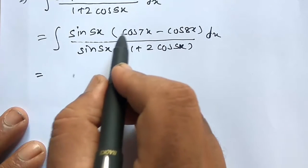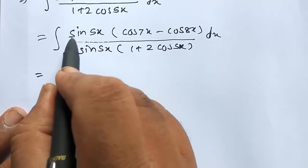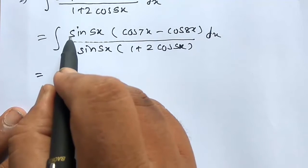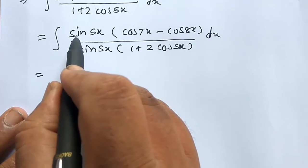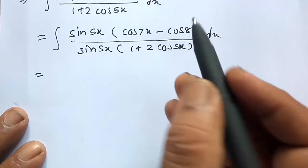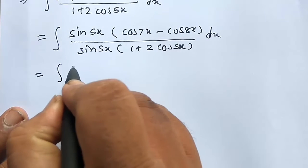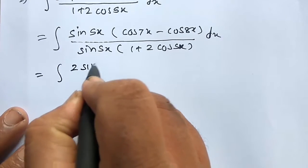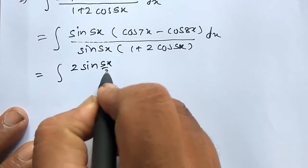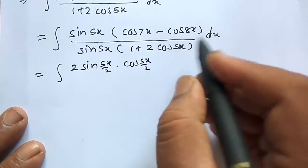Multiply sin 5x. Here we replace sin 5x by the half angle formula. So this is equal to 2 sin(5x/2) into cos(5x/2).